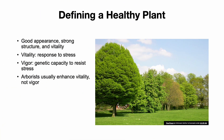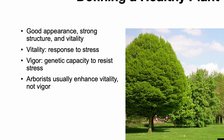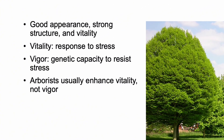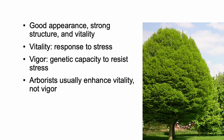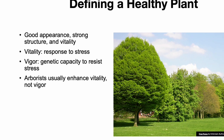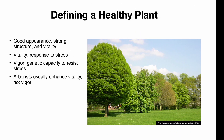So what makes a plant healthy? A healthy plant has good structure, looks good, and can handle stress. We often hear the terms vigor and vitality. Vigor is the plant's genetic potential to tolerate stress. Vitality is how well it's performing in its current environment. Most of what we do in PHC is aimed at supporting vitality, because we usually come in after the plant is already in place.